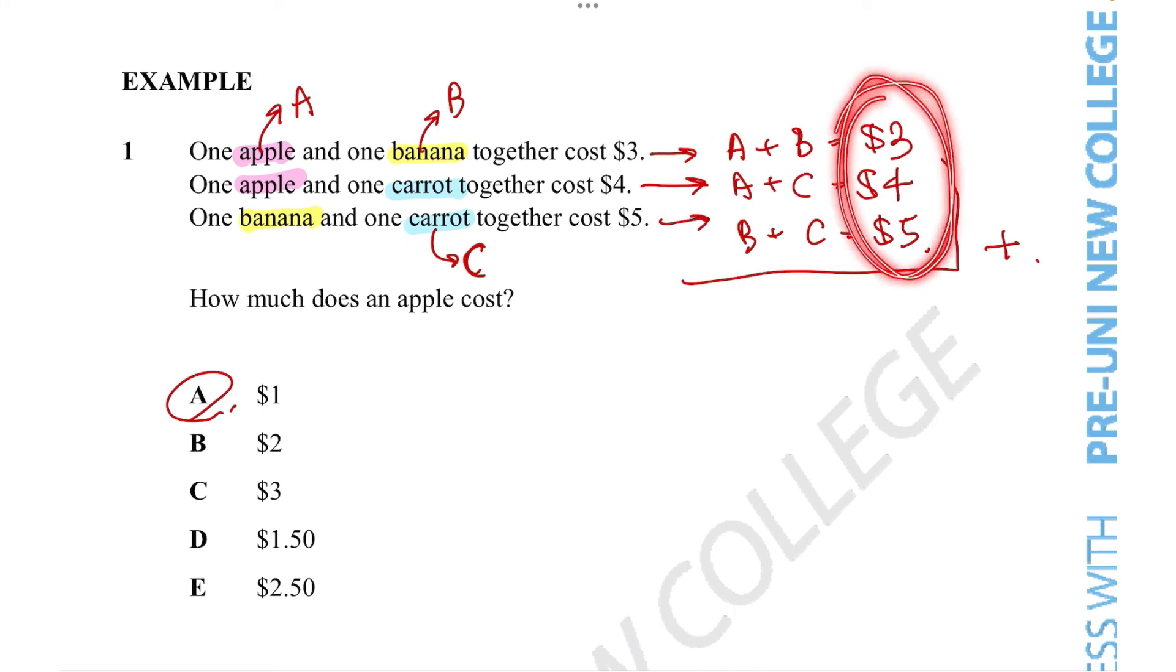These numbers on one side of the equal sign can just be added together. So $3 + $4 + $5 = $12. On the other side of the equal sign, it's slightly more complicated because we have A + B + A + C + B + C. Gathering like terms, we have 2A + 2B + 2C = $12.